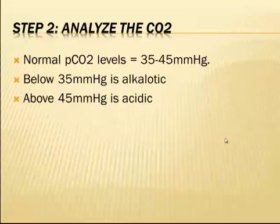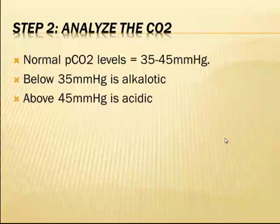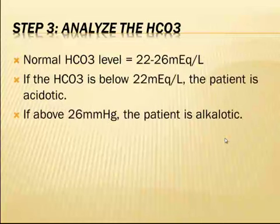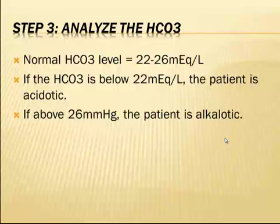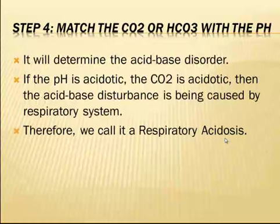On step two, analyze the carbon dioxide. The normal pCO2 level is 35 to 45 mmHg — below this it is alkalotic, and above this it is acidic. On step three, analyze the bicarbonate. The normal bicarb level is 22 to 26 milliequivalents per liter. If bicarbonate is below 22, the patient is acidotic; if it is above 26, the patient is alkalotic.